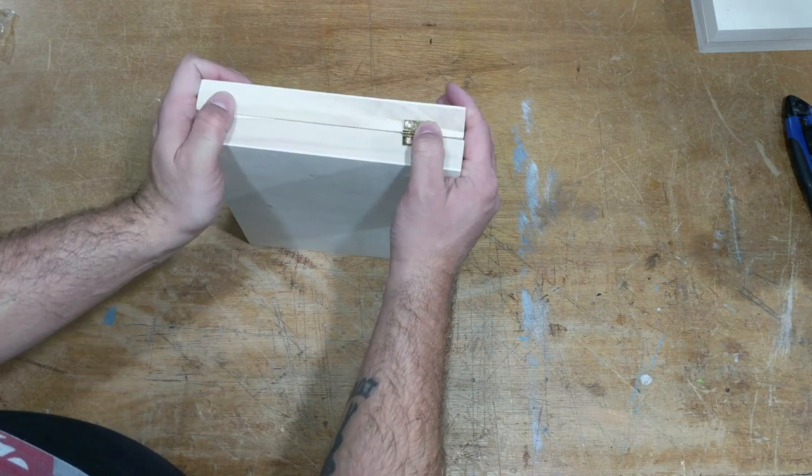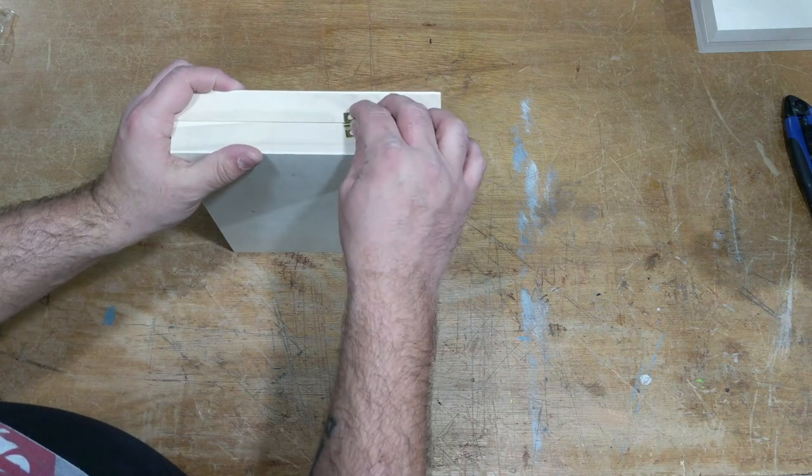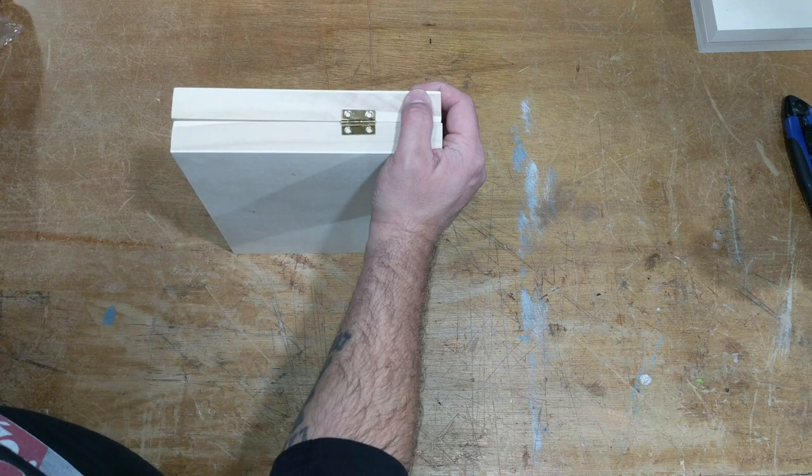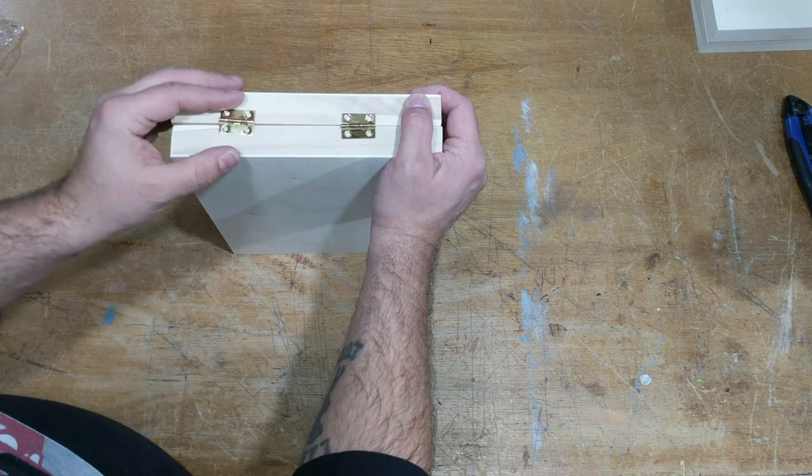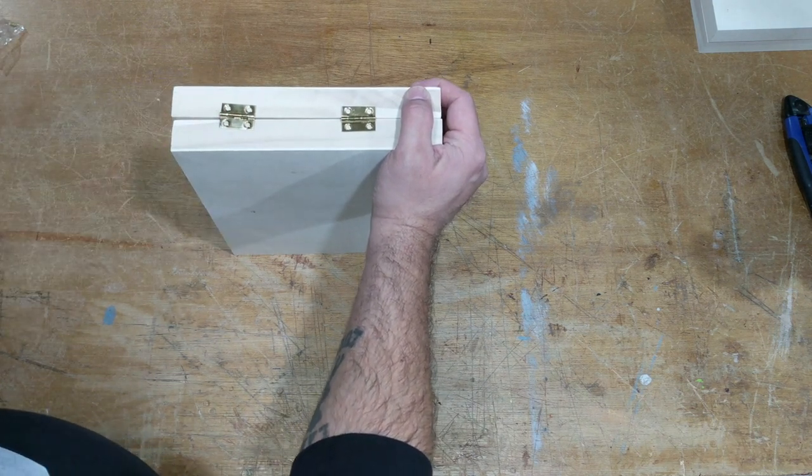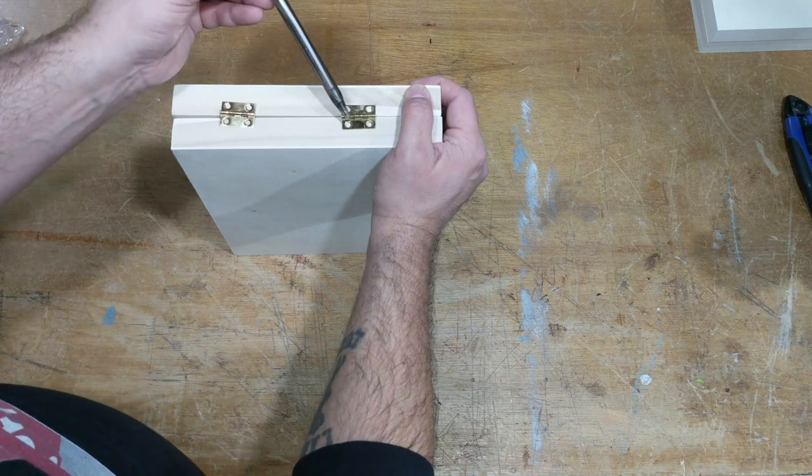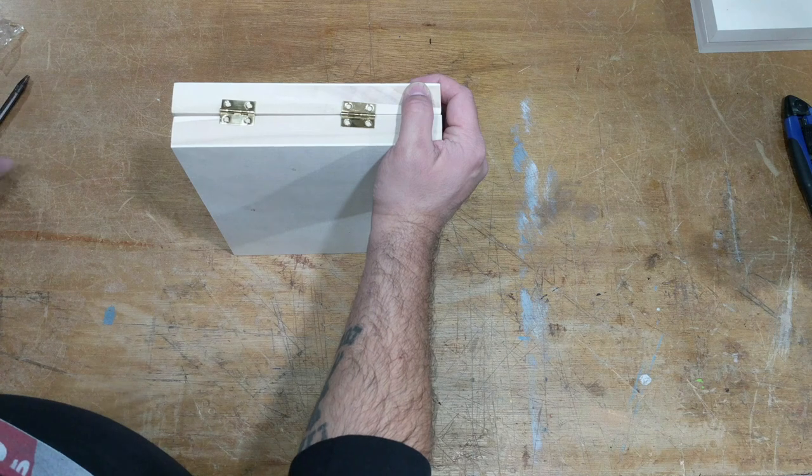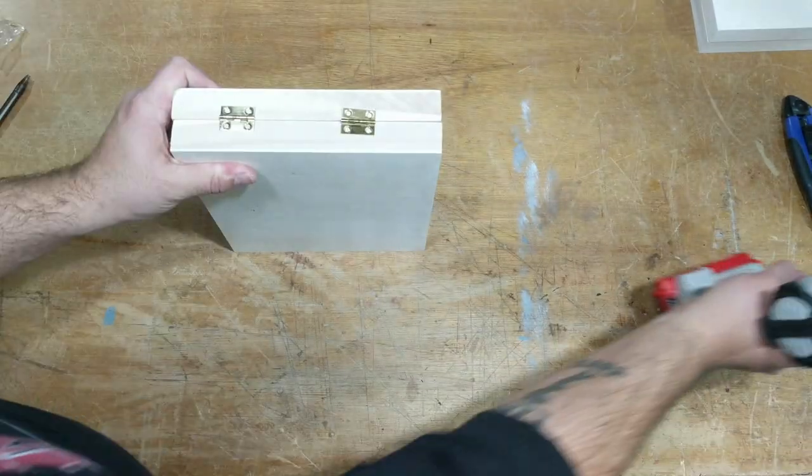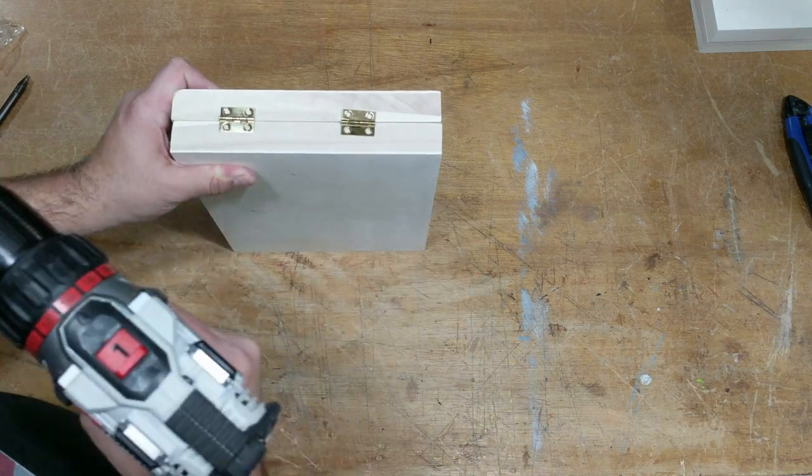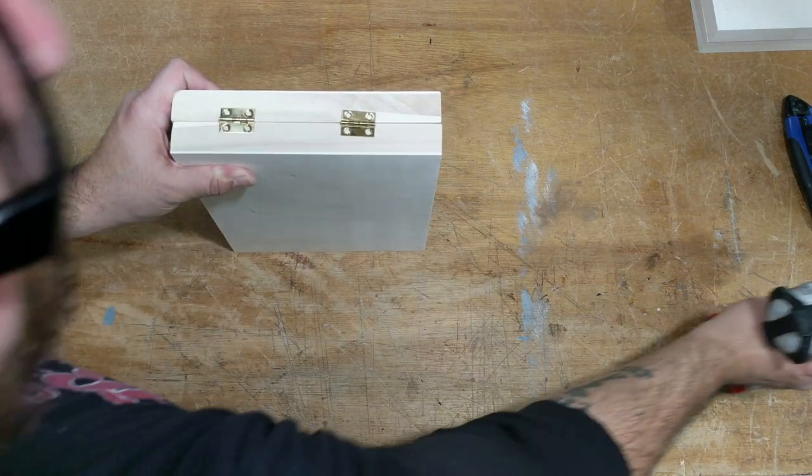So I'm just roughly going to eyeball these. I'm going to place them out where I want them to go, the two hinges. Then I'm going to grab a pencil or a pen, I'm just going to make marks where I want to drill the holes. And I'm going to use my drill to drill a pilot hole so the screws will go in a lot easier.